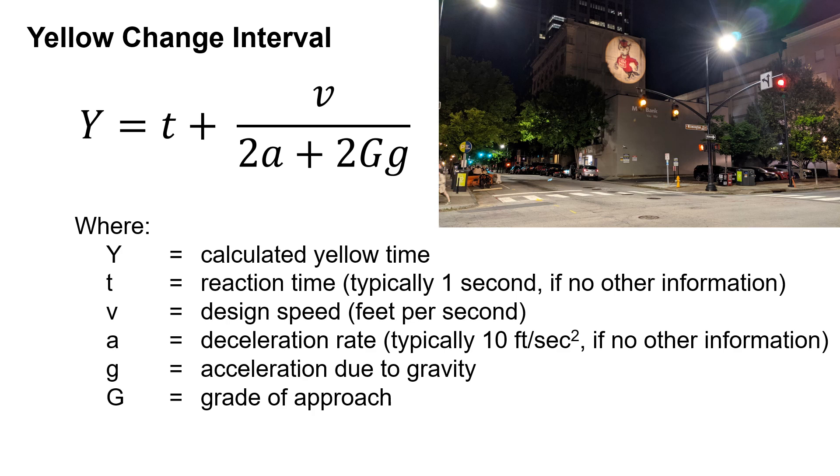The deceleration rate is typically 10 feet per second squared. Some agencies use 11.2 feet per second squared, but we can assume 10 feet per second squared if there's no other information provided. Then we add two times the grade of the approach times the acceleration due to gravity.